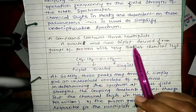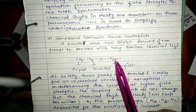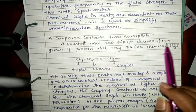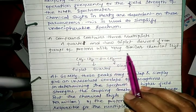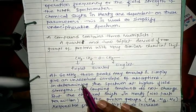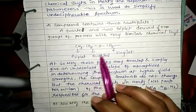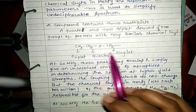A compound contains three multiplets: a quartet and two triplets derived from groups of protons with very similar chemical shifts. Here we see an example of NMR spectra.